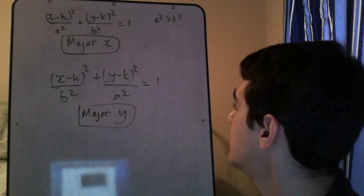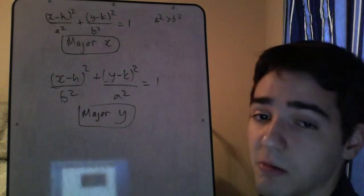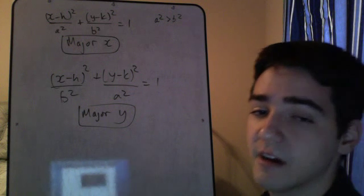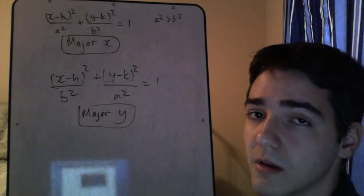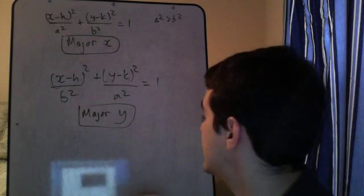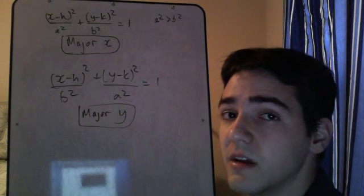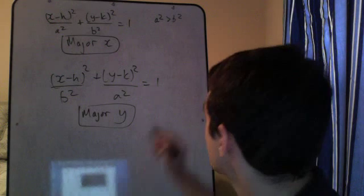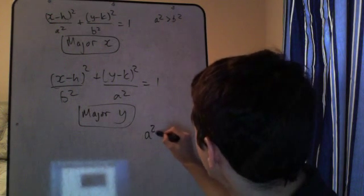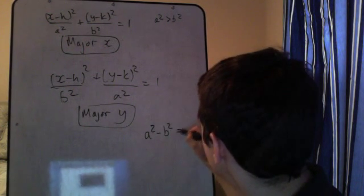Also another key thing with ellipses is it's got what's called a focus. It's got one on each side of the major axis. And it's inside the ellipse and it's a-squared minus b-squared equals c-squared.